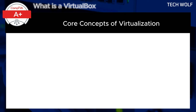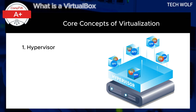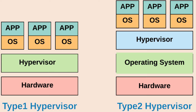To understand VirtualBox, let's break down the core concepts of virtualization as they apply to all similar software. A hypervisor, or virtual machine monitor, is software that creates and manages virtual machines. VirtualBox is a type 2 hypervisor, which means it runs within a host operating system, as opposed to a type 1 hypervisor like VMware ESXi, which runs directly on hardware without a host operating system.